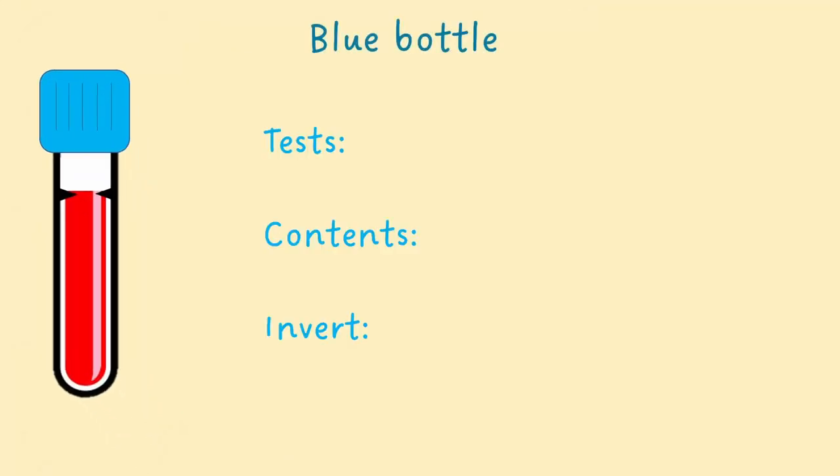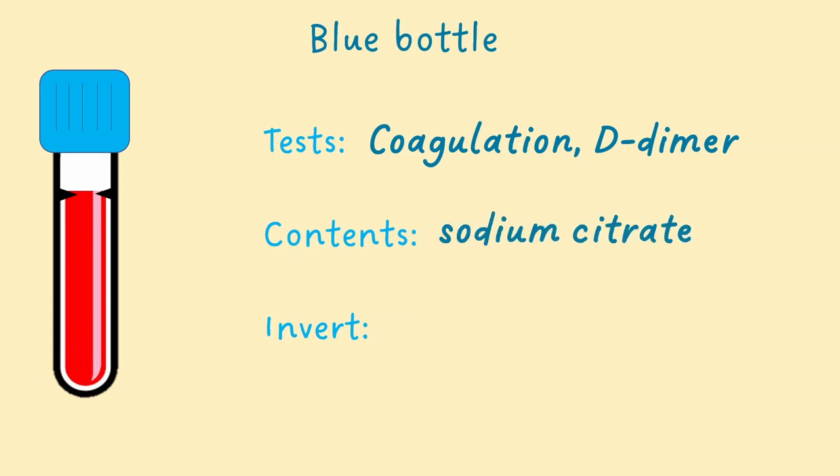The first bottle to fill is the blue bottle. This is commonly used to perform a coagulation screen or test D-dimer. It contains a reversible anticoagulant, sodium citrate. This prevents the blood clotting before it goes to the lab, where the lab can then remove the anticoagulant and test the blood's ability to clot. We should gently invert the blue bottle three to four times to properly mix the blood with the sodium citrate.